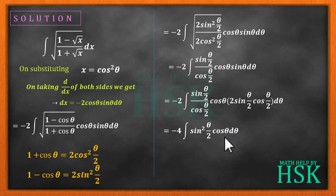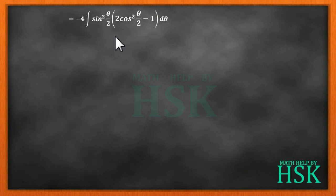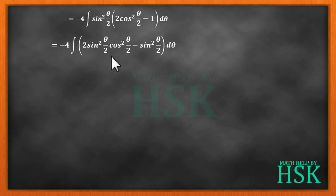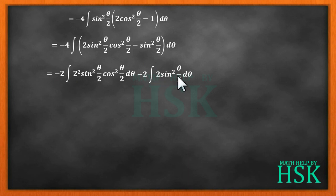So I get this as minus 4 times integration of sin²(θ/2) cos θ dθ. Further I have written cos θ equal to 2 cos²(θ/2) minus 1. This term is further simplified by opening the bracket, so I get minus 4 times integration of [2 sin²(θ/2) cos²(θ/2) minus sin²(θ/2)] dθ. I take a 2 from this 4 and write it with the 2, giving me 2² here; and from this 4 I take a 2 and write it with 2 sin²(θ/2).